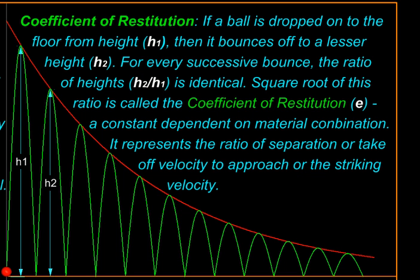And therefore, e, the coefficient of restitution, represents the ratio of velocity with which the body bounces off the floor to velocity with which it strikes the floor.